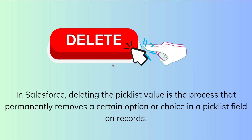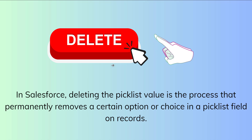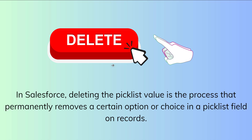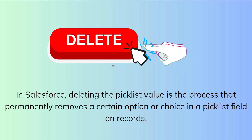In Salesforce, deleting a picklist value is the process that permanently removes certain options or choices in a picklist field on a record. On deletion of the picklist value, the value will no longer be available for clients. After deleting the picklist value, the deleted value would not appear in the list of choices anymore, making it impossible for anyone to pick it or link it to any record in the future. Moreover, we delete values to preserve data correctness and consistency and to get rid of outdated or pointless options. It also ensures that users can only choose current and valid choices while entering data, preventing mistakes from inconsistent data entry.